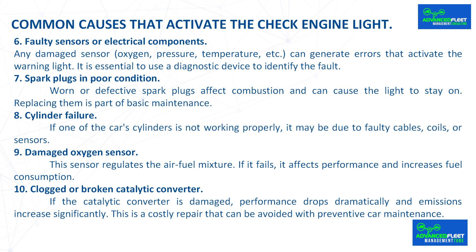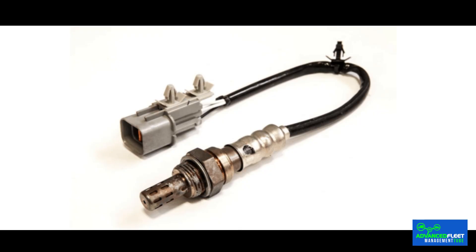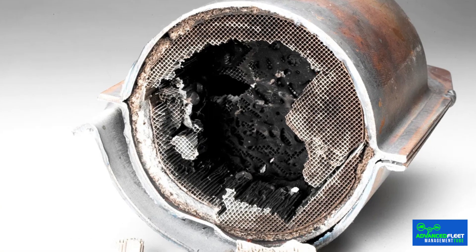Spark plugs in poor condition — worn or defective spark plugs affect combustion and can cause the light to stay on; replacing them is part of basic maintenance. Cylinder failure — if one of the car's cylinders is not working properly, it may be due to faulty cables, coils, or sensors. Damaged oxygen sensor — this sensor regulates the air-fuel mixture; if it fails, it affects performance and increases fuel consumption. Clogged or broken catalytic converter — if damaged, performance drops dramatically and emissions increase significantly; this is a costly repair that can be avoided with preventive maintenance.